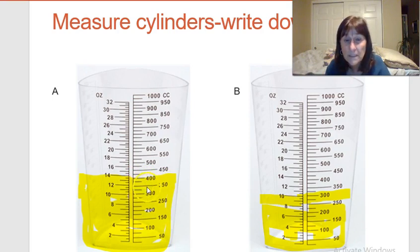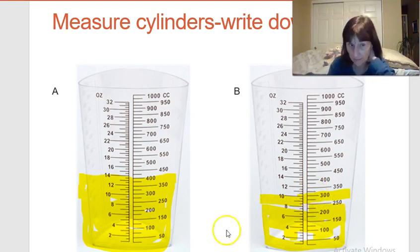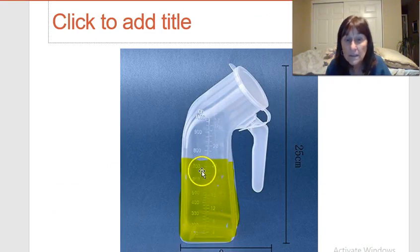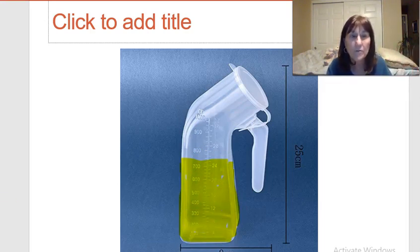Graduated cylinders are marked in 25 cc increments — 25, 50, 75, 100, and so on. Urinals are also already marked in 25 cc increments. If the level falls between 725 and 750, you don't need to be exact — pick either value. You don't have to be perfectly precise when measuring urine output.